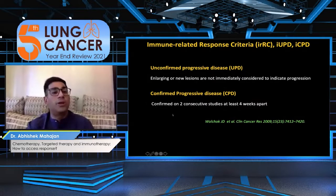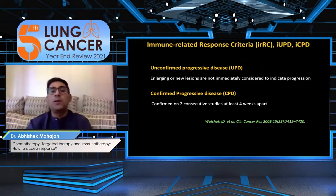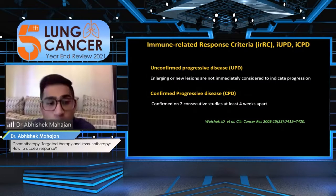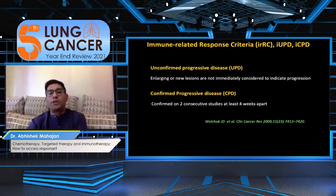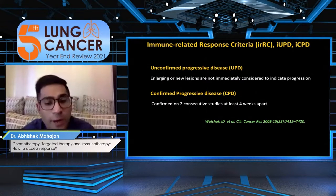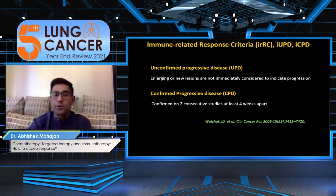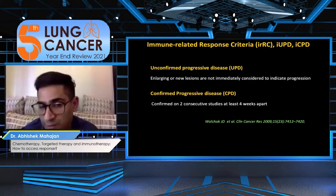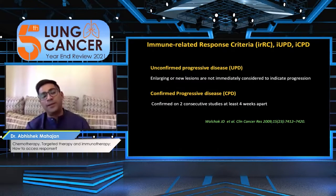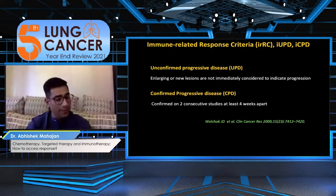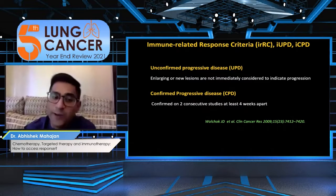The new terminology commonly heard in patients managed with immunotherapy is unconfirmed progression. Any disease progression at the first onset should be labelled as unconfirmed progression, which should be confirmed after 4 weeks. If it is definitive progression then only should it be labelled as confirmed progressive disease. Otherwise if there is no change in size it should be labelled as stable disease, and if it has regressed as partial response.